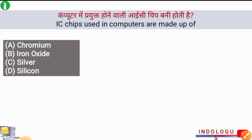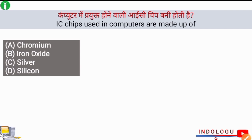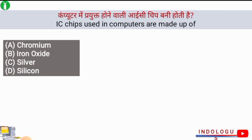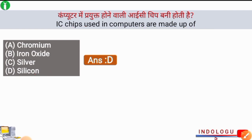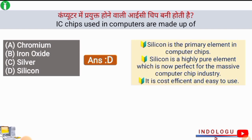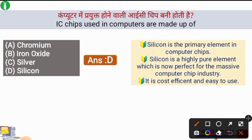Next question: IC chips used in computers are made up of what? The right answer is option D, silicon. IC chips used in computers are made from silicon. Silicon is a type of metalloid and is the primary element in computer chips. Silicon is a highly pure element which is perfect for the massive computer chip industry — it is cost efficient and easy to use.